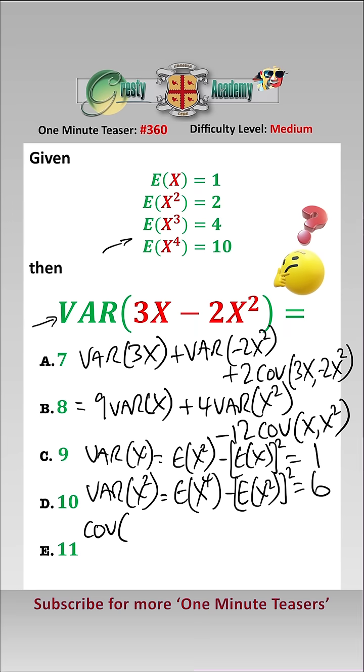And the covariance of X and X² is equal to the expected value of X times X², which is X³ minus E(X), E(X²). And again, from the numbers above, that equals 2.